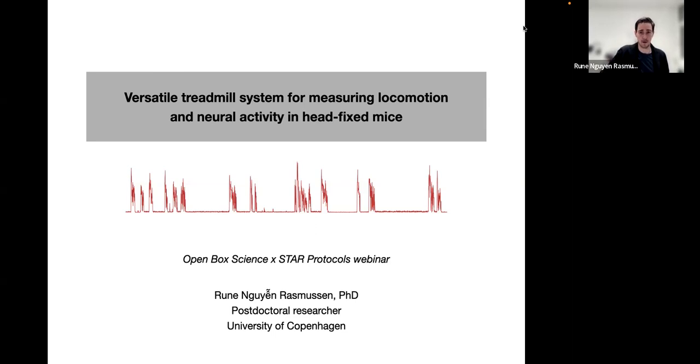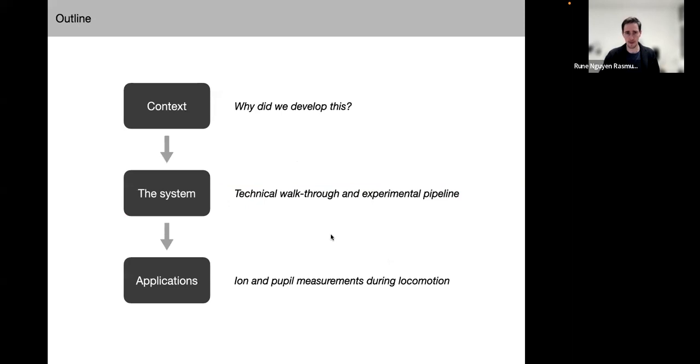However, my talk today will be rather technical than biological, and I'm very happy to present our recent Star Protocol that we titled Versatile Treadmill System for Measuring Locomotion and Neural Activity in Head-Fixed Mice. I have separated my talk today into essentially three main parts. First, I'll provide some biological context for why we decided to develop and build this treadmill system. Next, I'll give an overview of the technical components as well as the start-to-end experimental pipeline that you need to go through. And finally, I'll end the talk by giving you two specific examples of how we have used this treadmill system in the lab.